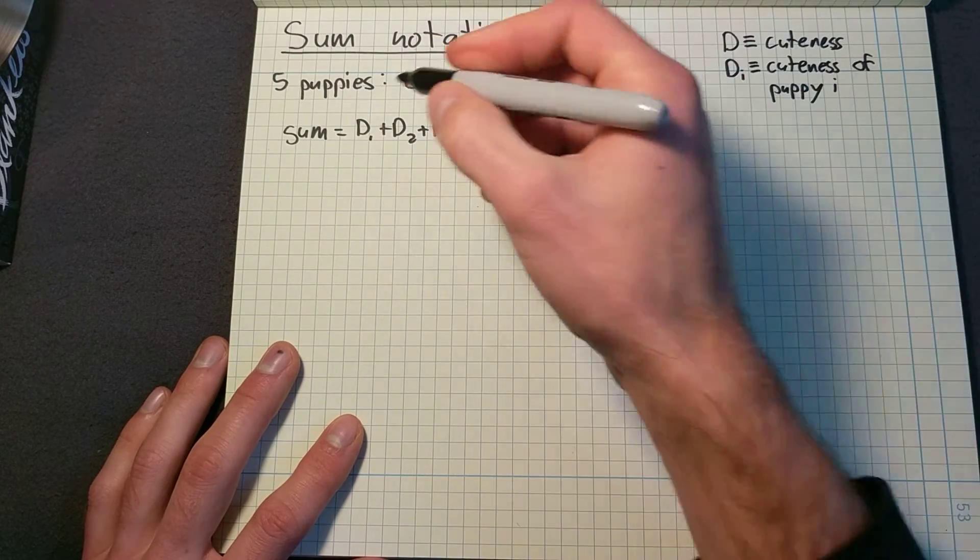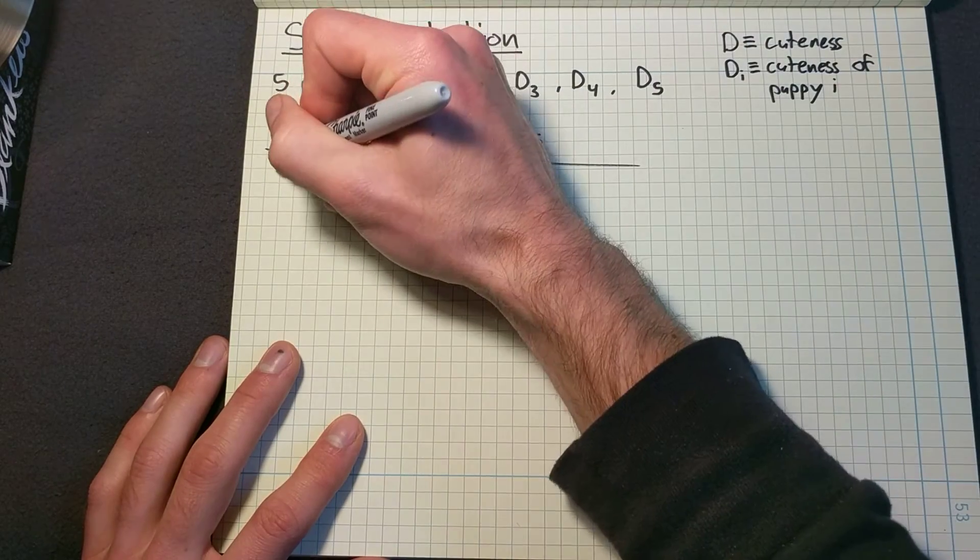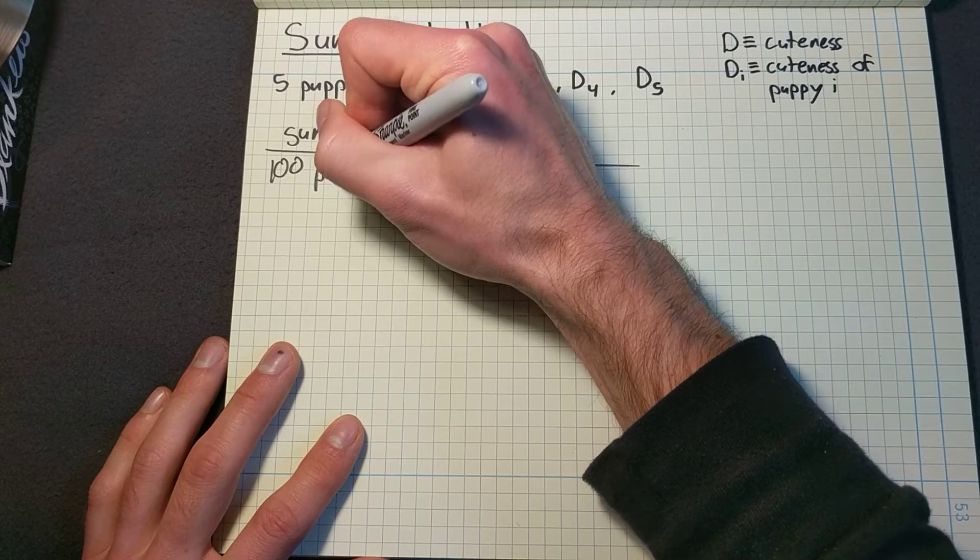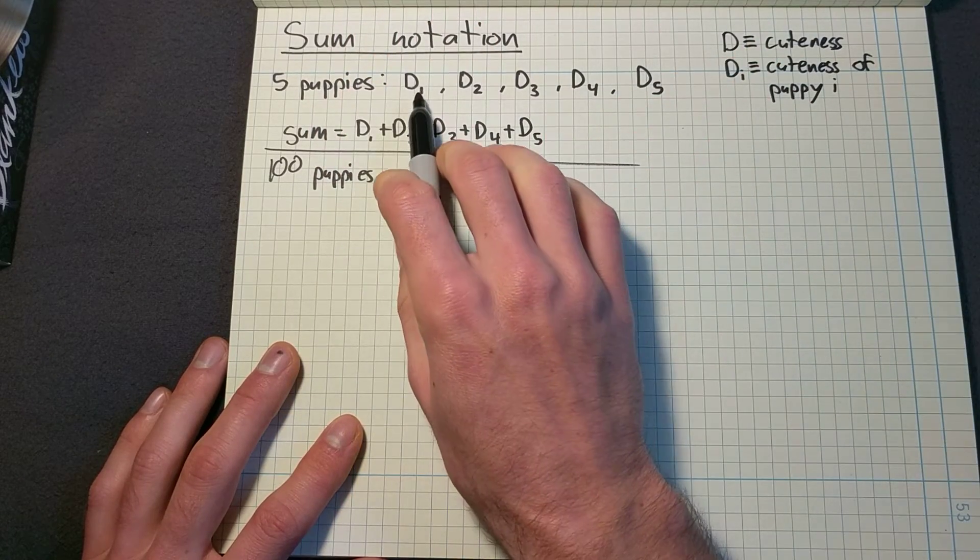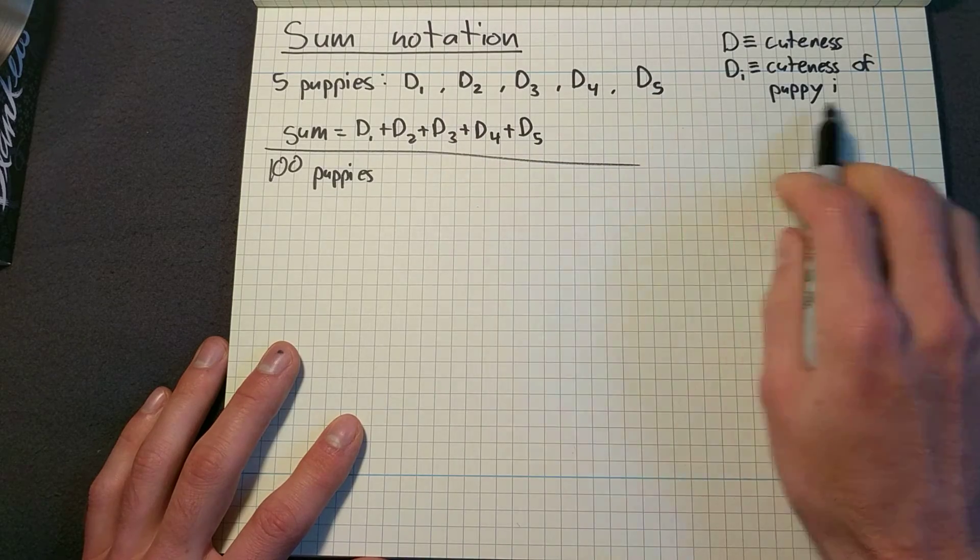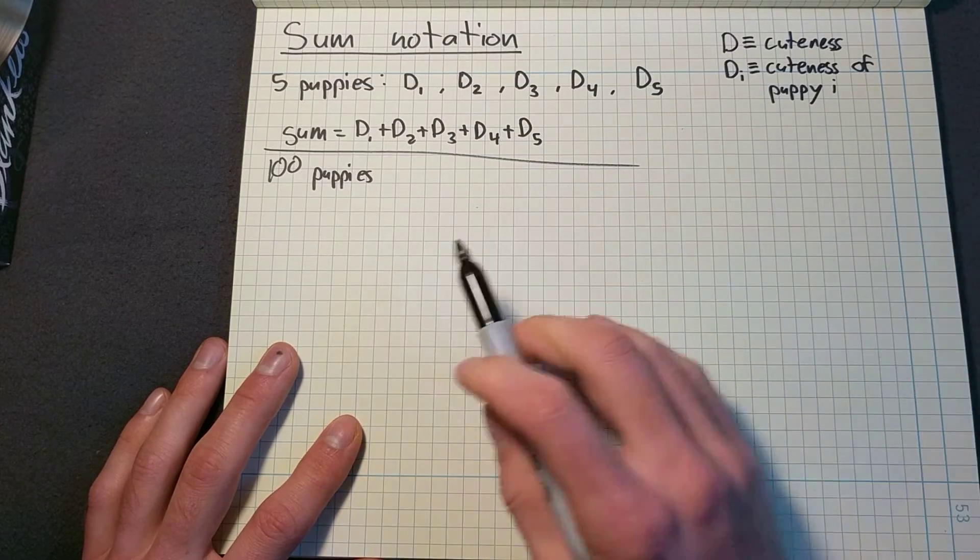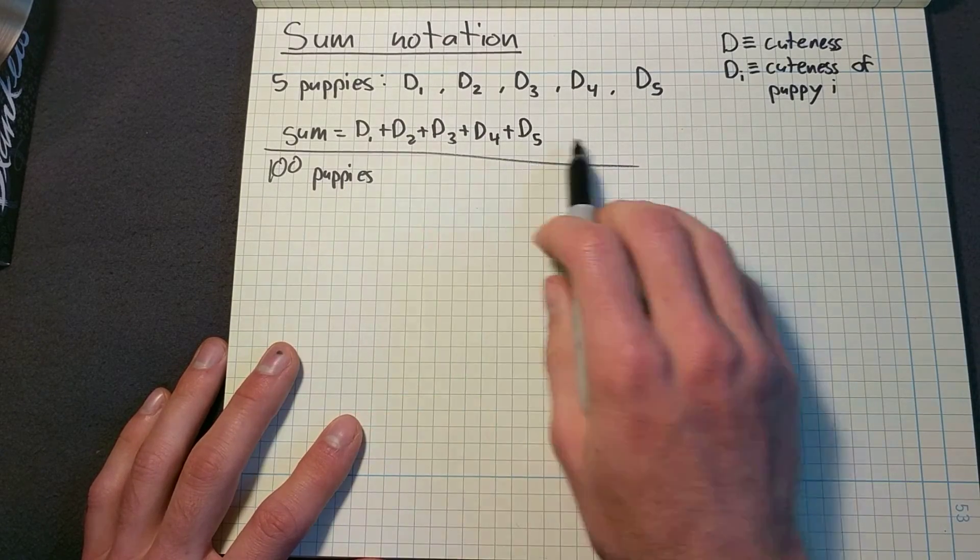Now let's say we had a hundred puppies. And again, they'll be named D underscore one all the way up to a hundred. But I don't want to write out a hundred terms here.